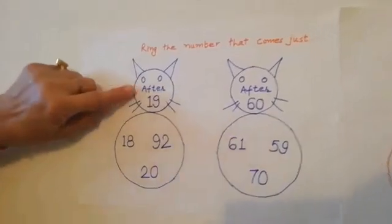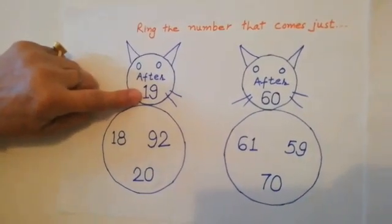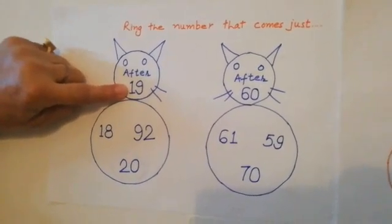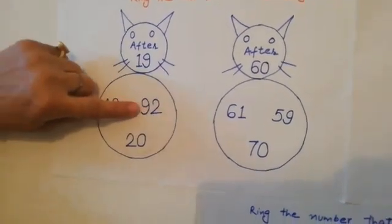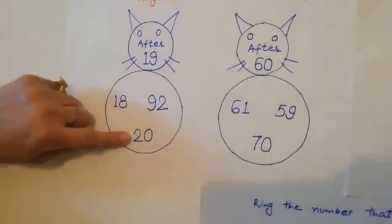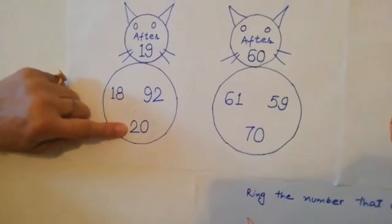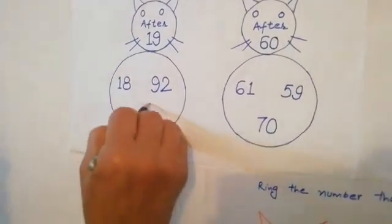What is written here? After. And which number is this? 19. What comes after 19? 18, 92, 20. What comes after 19? 20. We will ring this number.